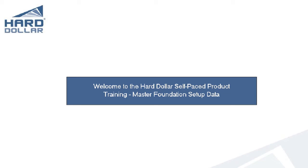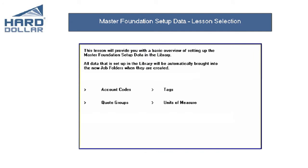Welcome to Hard Dollar Self-Paced Product Training, Foundation Setup Data Lesson. This lesson will provide you with a basic overview of setting up the master foundation setup data in the library. The four tabs covered in this lesson are account codes, tags, quote group tags, and units of measure. All data set up in the library will be automatically brought into new job folders when they are created.